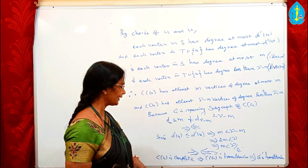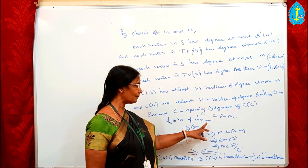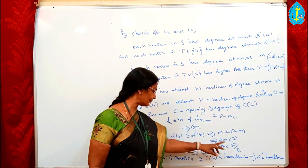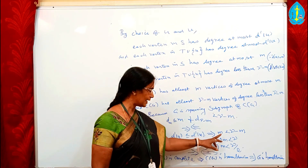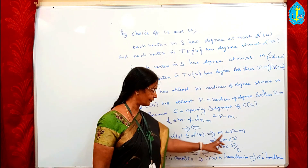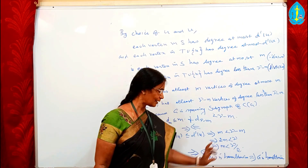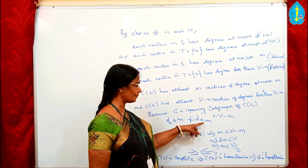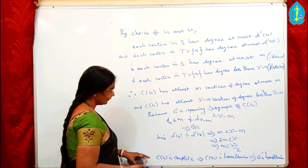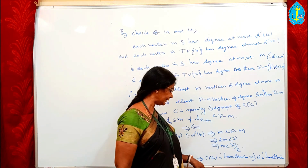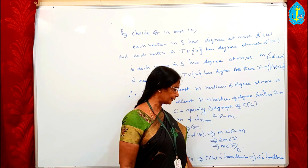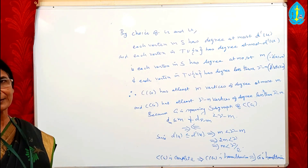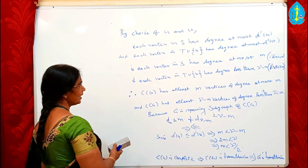The contradiction arises because the hypothesis states there is no value of M ≤ gamma/2 for which D_M ≤ M and D_{gamma−M} < gamma − M. But we have found such an M: since D'(U) ≤ D'(V) implies 2M < gamma, so M < gamma/2, and both conditions hold. Therefore C(G) must be complete. C(G) complete implies C(G) is Hamiltonian, and C(G) Hamiltonian implies G is Hamiltonian. Therefore G is a Hamiltonian graph.